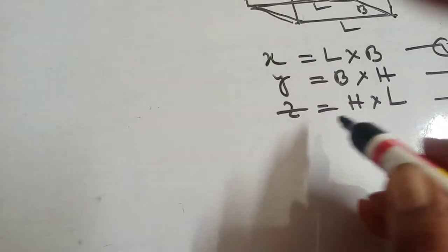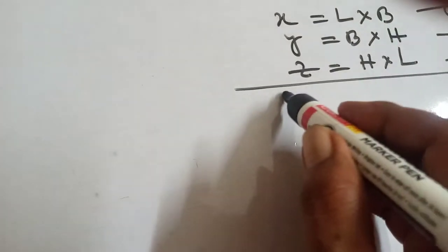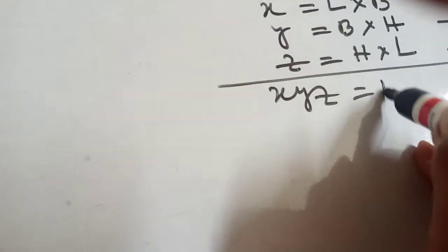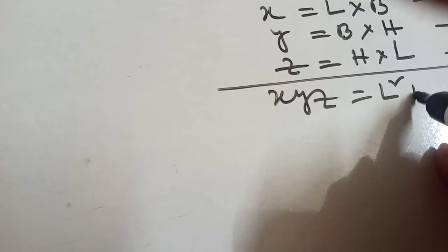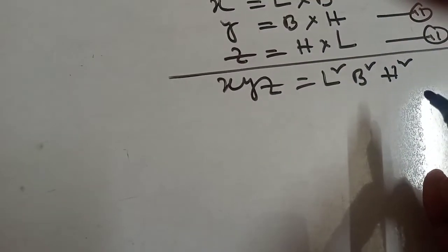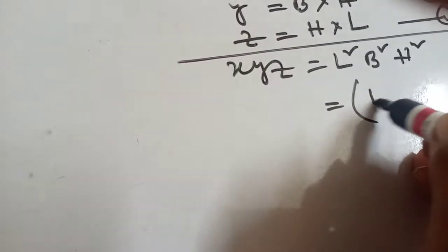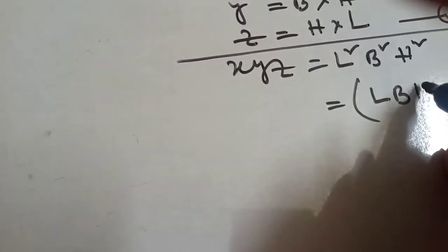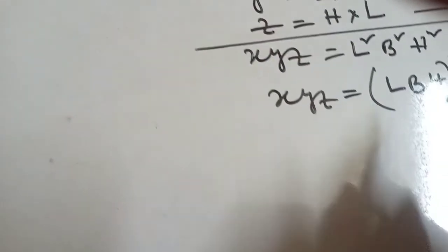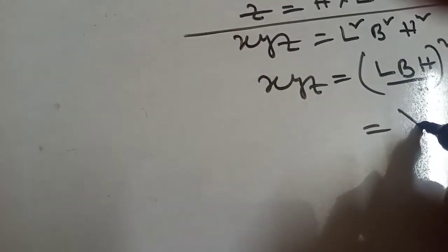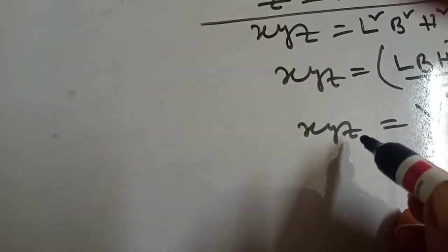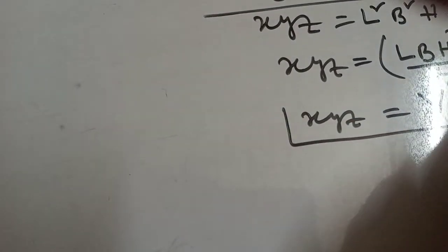Now multiply x, y, z. x, y, z equals to 2 times l squared, b squared, height. Now this one you can write l b h whole square. This is x, y, z, and this one is volume. That means v square equals xyz. This is root.